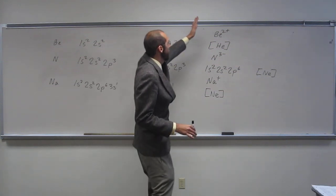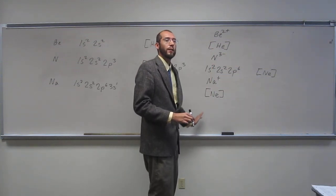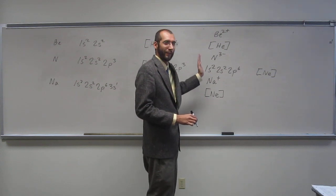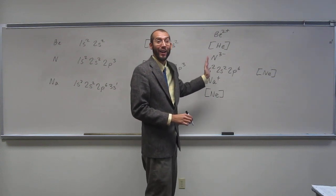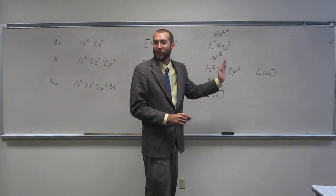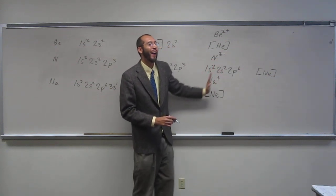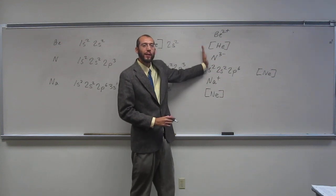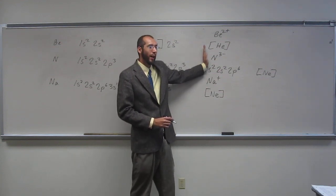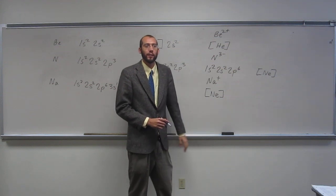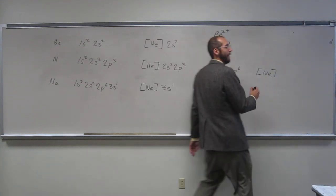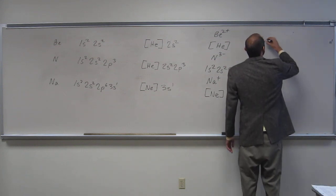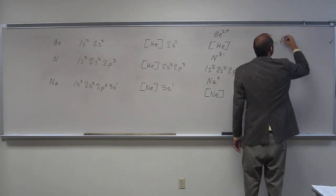So do any of these ions have the same electron configuration as each other? N3 minus and what? Na. Na+. Na+, right? No, they both have neon as their electron configuration, right? But Na+ and N3 minus are two ions that are isoelectronic. Does that make sense? At least placate me and say yes, this makes sense, if it makes sense.